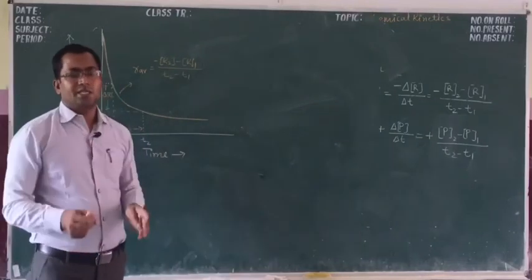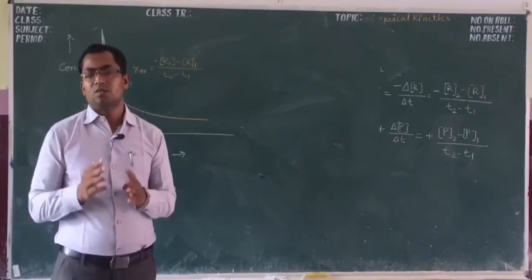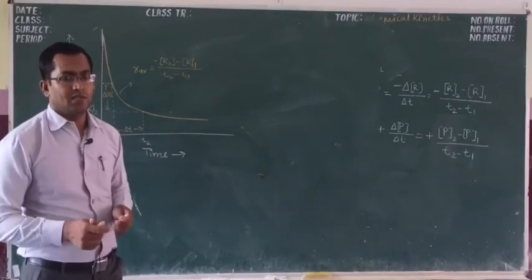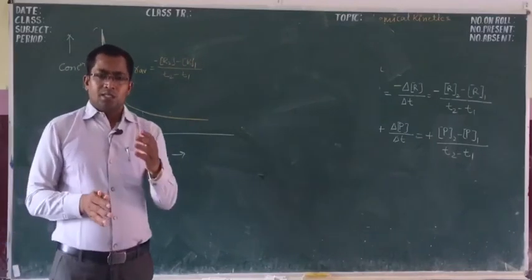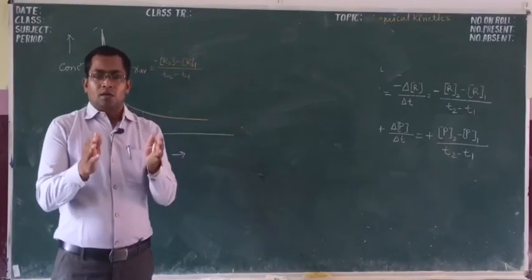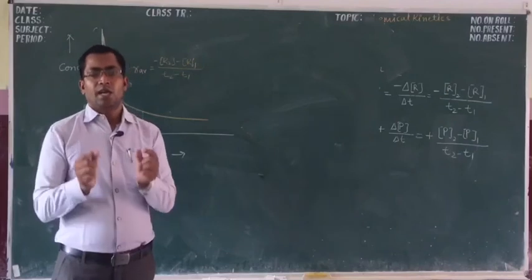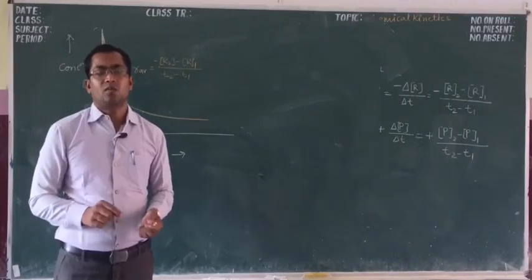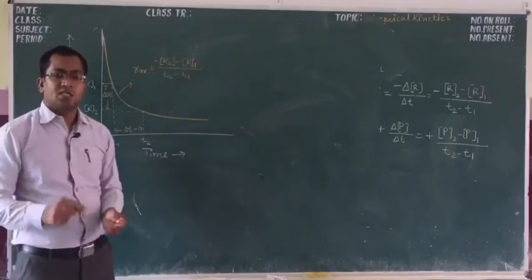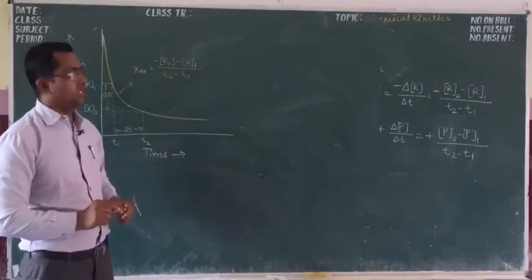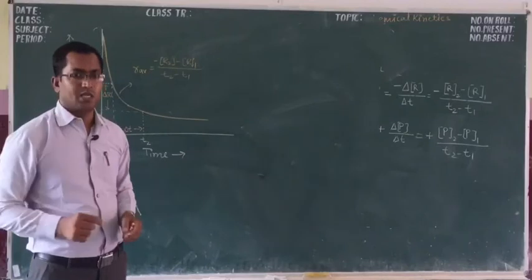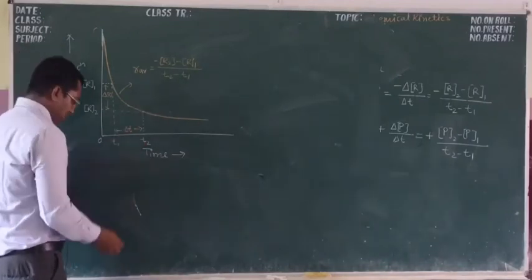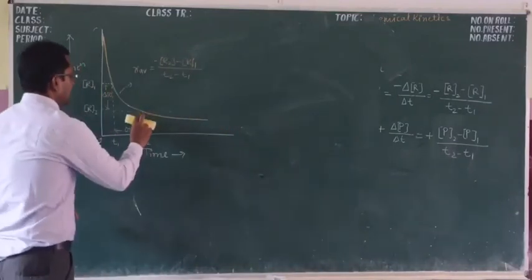There are two types of rate of reaction. One is average rate of reaction and the other is instantaneous rate of reaction. Average rate of reaction is the rate calculated for a time interval. Instantaneous rate of reaction is the rate calculated for a particular moment. For instantaneous rate of reaction, the change in time and change in concentration become very small, so instead of delta we use the small d notation.